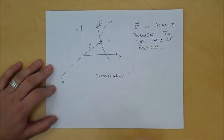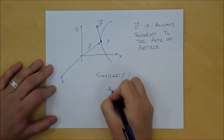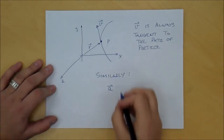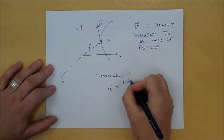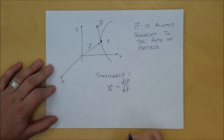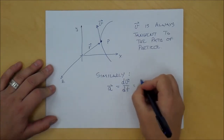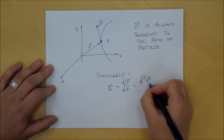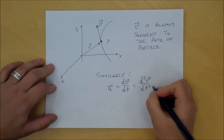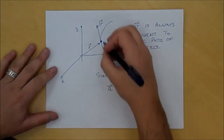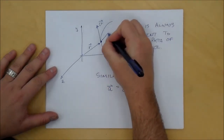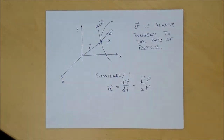Similarly, we can find the instantaneous acceleration of a particle by taking the derivative of the velocity vector, which is equal to the second derivative of the position vector. The acceleration vector is not necessarily tangent to the path.